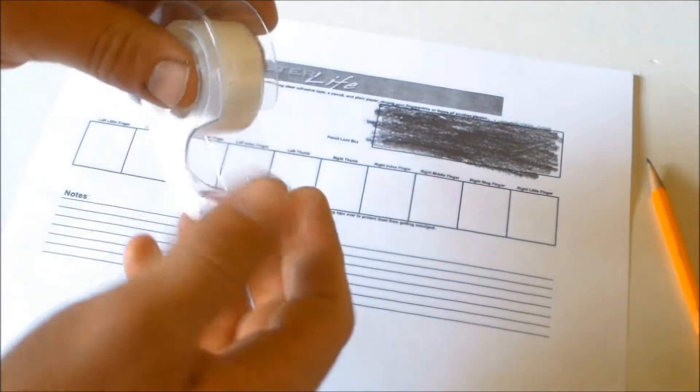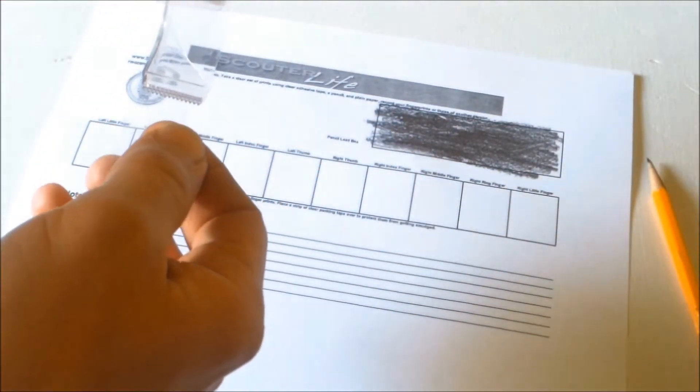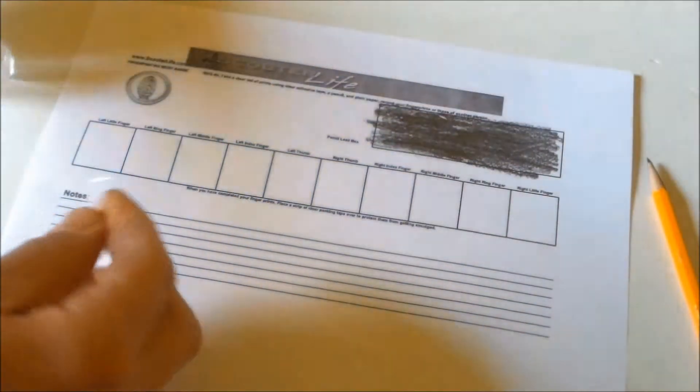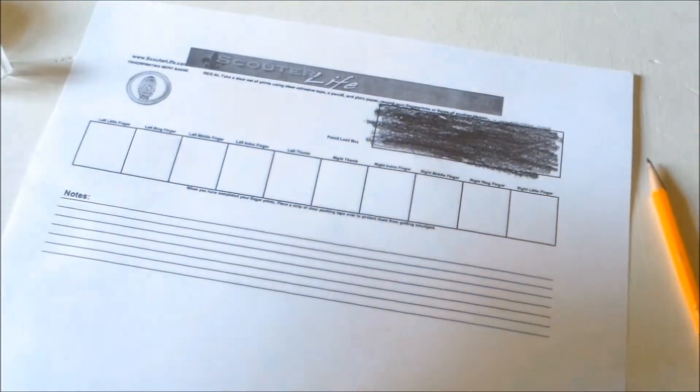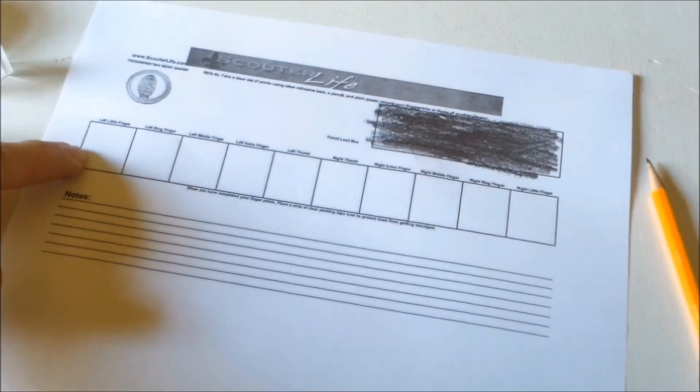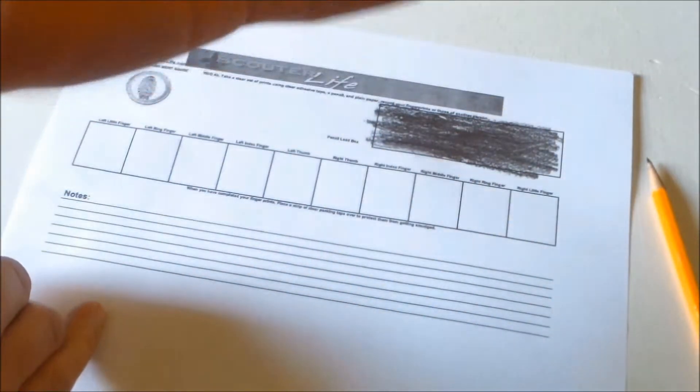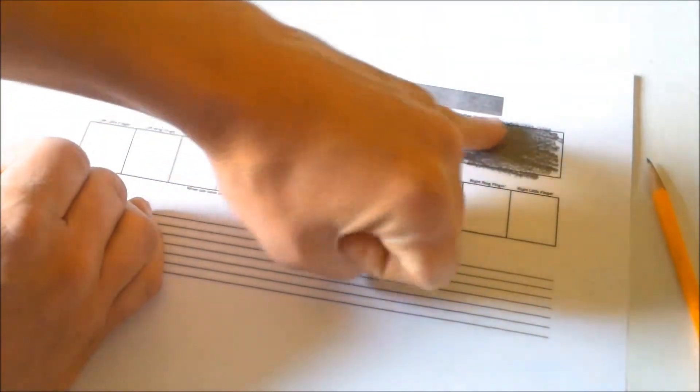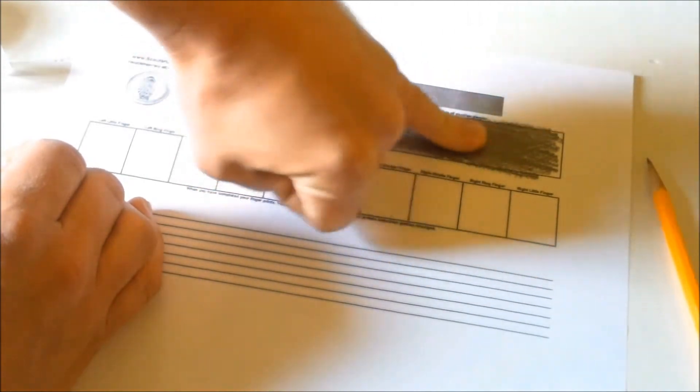You're going to take a piece of tape, have it ready, and start with your left little finger. I'm going to take my left little finger and rub it in that pencil lead.